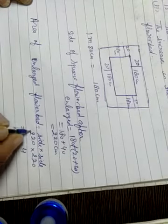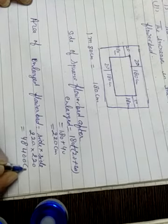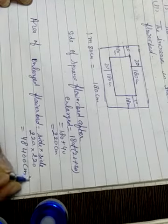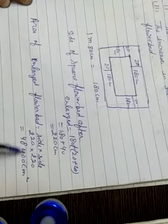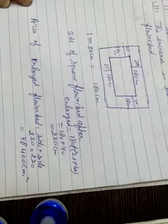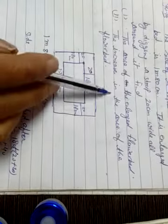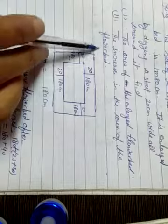220 multiplied by 220: 22 times 22 gives 44, working through the multiplication gives 48,400. So the area of the enlarged flower bed is equal to 48,400 cm².